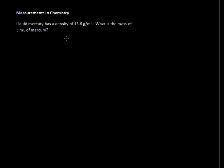In this video, I'll walk through an example using density and then talk a little bit more about some of the measurements we use in chemistry. Liquid mercury has a density of 13.6 grams per milliliter. What is the mass of 3 milliliters of mercury? Now this is kind of a simple problem, but I want to use it to talk about density.